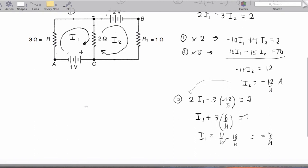So those are the two currents, but we want the current through the 2-ohm resistor. That's I1 minus I2, which is negative 7 over 11 minus negative 12 over 11, giving negative 7 plus 12 over 11. That gives me 5/11 of an amp going through this 2-ohm resistor. That wraps up our first practice test.